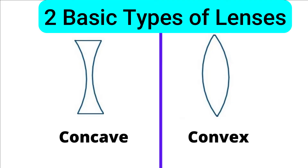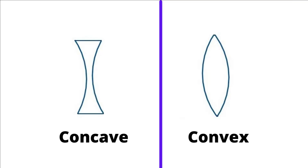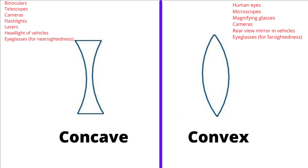There are two basic types of lenses: concave lens and convex lens. The two types of lenses have different shapes, so they bend light and form images in different ways.